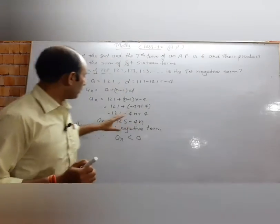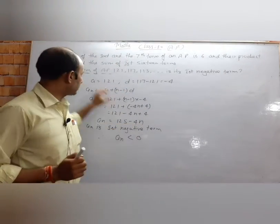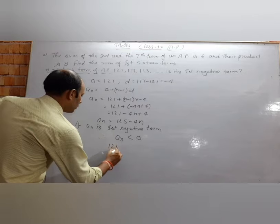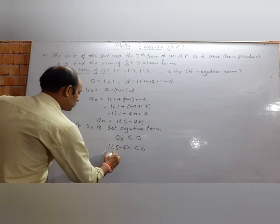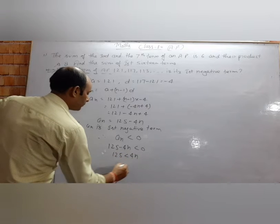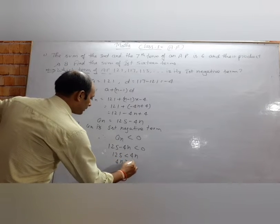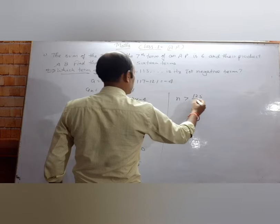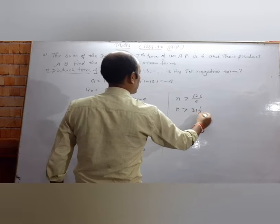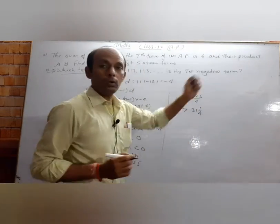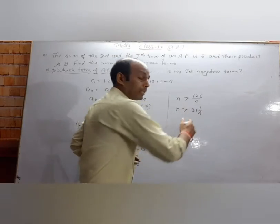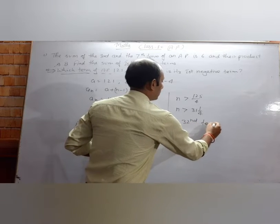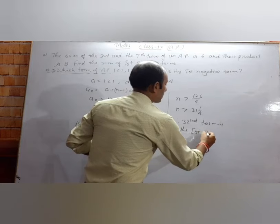If the nth term is the first negative term, then 125 minus 4n less than 0. Taking 125 to the other side: 4n greater than 125, so n is greater than 125 upon 4, which is 31 and 1/4. Since up to 31 terms there is no negative term, therefore the 32nd term is the first negative term.